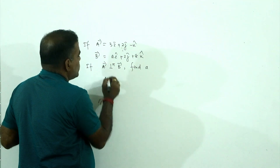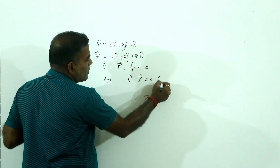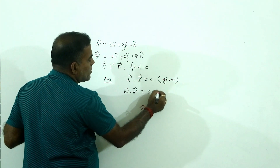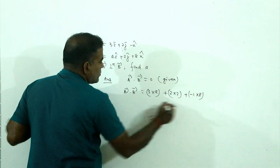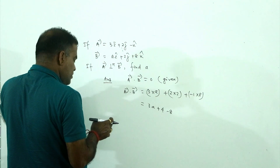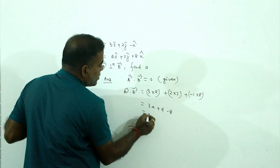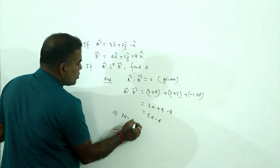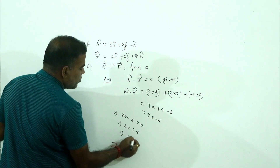Answer. Since a is perpendicular to b, the dot product a·b equals zero. That gives 3a plus 2×2 plus (−1)×8 equals zero, which is 3a plus 4 minus 8 equals zero, so 3a minus 4 equals zero. Therefore 3a equals 4, which implies a equals 4 by 3.